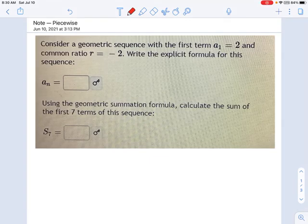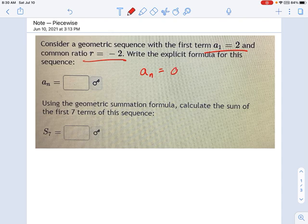In this video, we're going to go through two quick examples of evaluating a geometric series. We're given some information here at the top: a₁ equals 2, r equals negative 2, and it wants to know the explicit formula. We haven't gotten to the series part yet, but if you remember what the explicit formula is for geometrics,